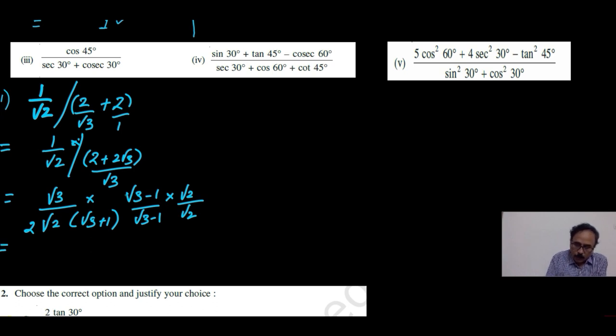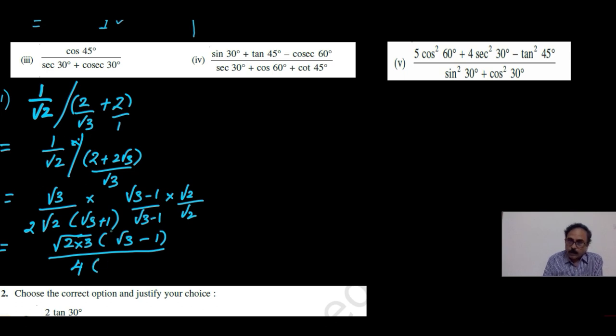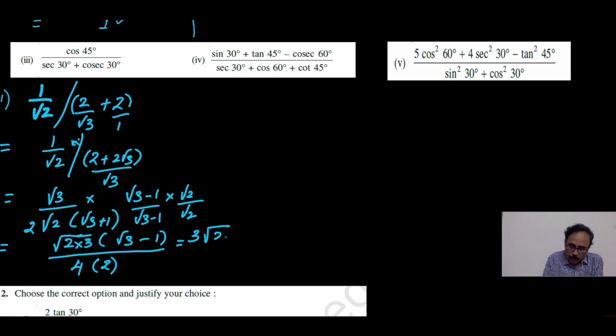To rationalize this root 2, we will multiply root 2 and divide by root 2. Now it's going to be root 2 times root 2 times root 3 times root 3 minus 1 in the numerator, and in the denominator root 2 into root 2 is 2, 2 into 2 is 4, and then root 3 plus 1 into root 3 minus 1 is just like a plus b into a minus b. Therefore a square minus b square: root 3 squared minus 1 is 2. So root 3 into root 3 is 3, and therefore it can be written as 3 root 2 minus root 6, whole divided by 8. So this is the final answer.